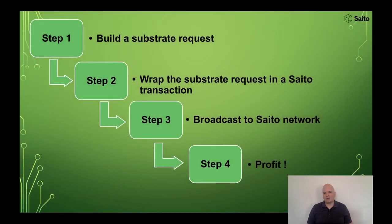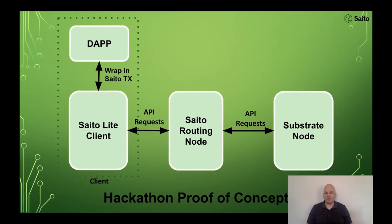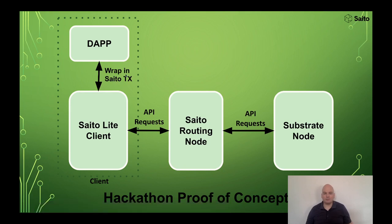What I built for the hackathon was this: we wrap a substrate request or substrate transaction within a Sado transaction, broadcast that to the Sado network, and the Sado network negotiates the data with the substrate endpoint. Right now, the 'wrap in Sado transaction' part of the API doesn't actually wrap anything yet — it's just an API that lets you interact with Polkadot, Sado, and ZKPs, which is step one of this potential project.